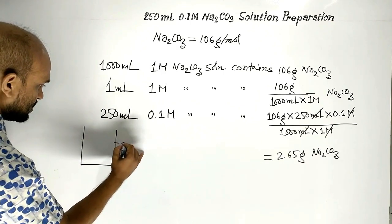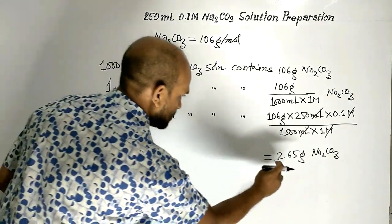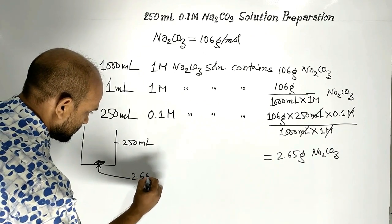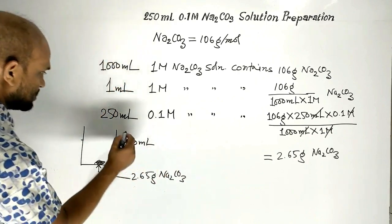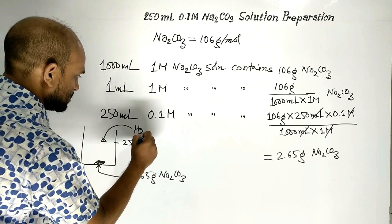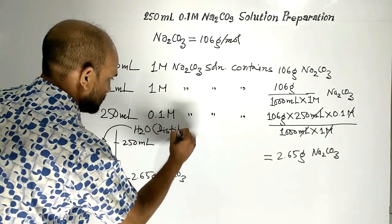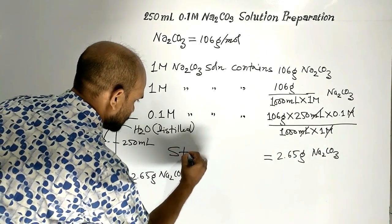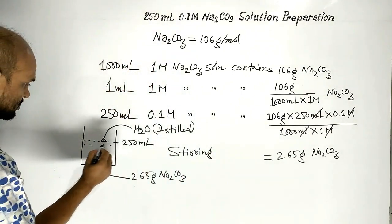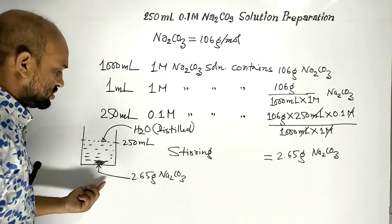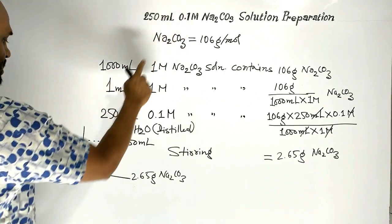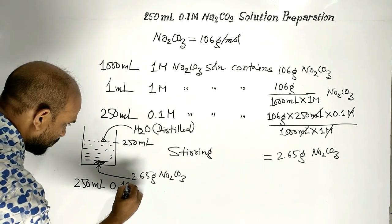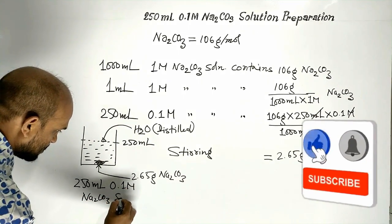Suppose this is a beaker of 250 milliliter. First, 2.65 gram of sodium carbonate is taken in the beaker. Then distilled water is added up to 250 milliliter and the solution is stirred. We then get 250 milliliter 0.1 molar sodium carbonate solution.